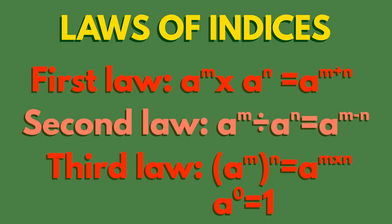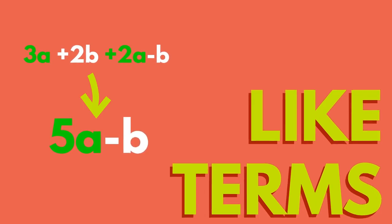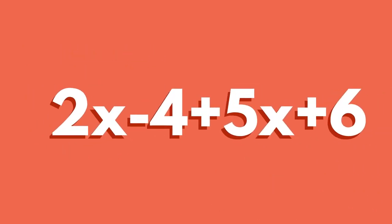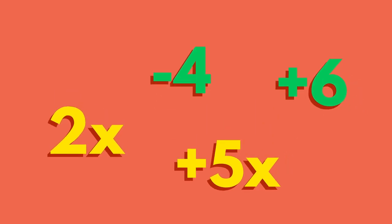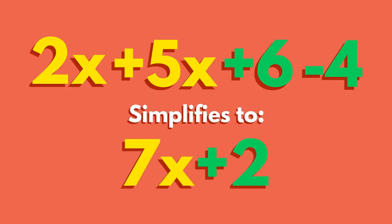Let's try to simplify an expression by collecting its like terms. In this example, let's highlight each term. Be sure to capture the plus or minus signs in front of each one. Then we can move them into the best order so that like terms are together. Like terms have the same combination of letters, for example the x terms in this equation.